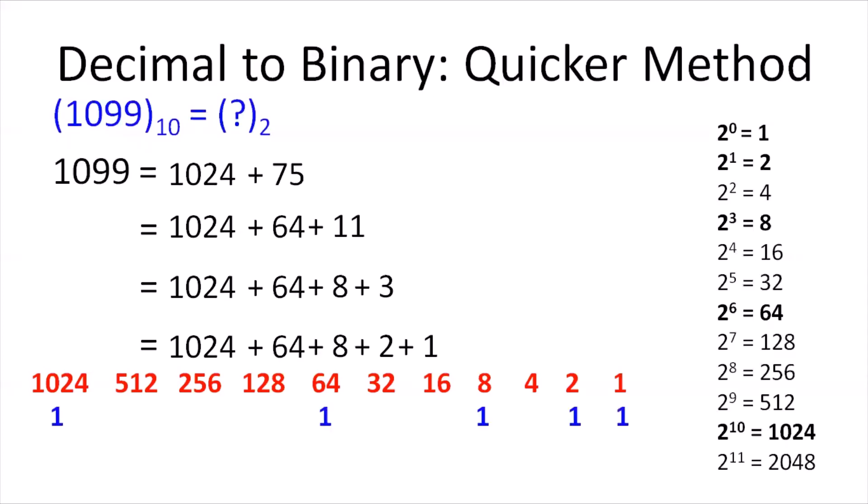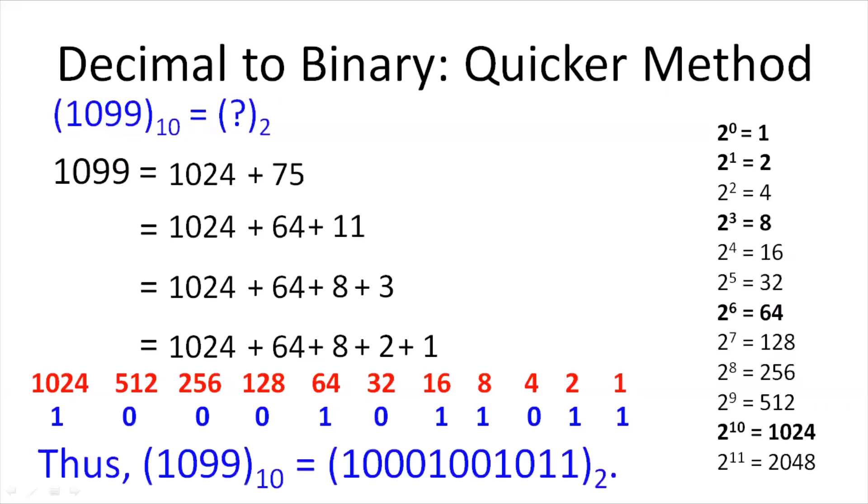So thus, we put a bit 1 against the positional weights 1024, 64, 8, 2, and 1. Rest of the positions are then filled in with 0. And ta-da! The resulting number is the binary equivalent of the decimal number 1099.